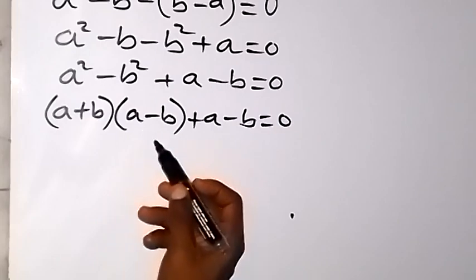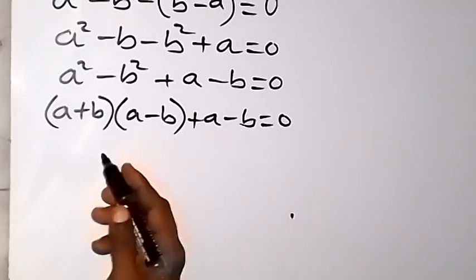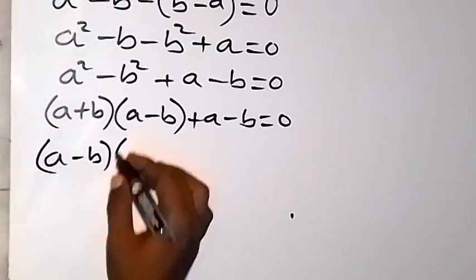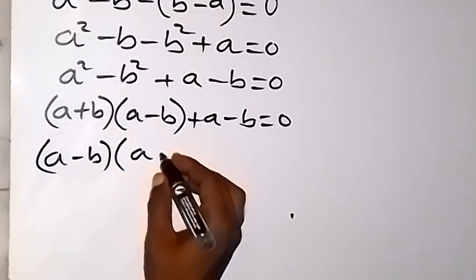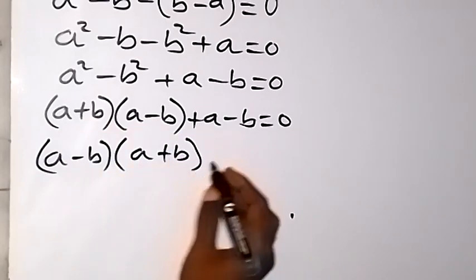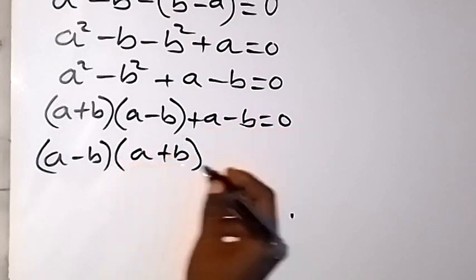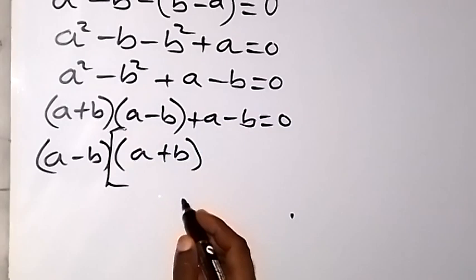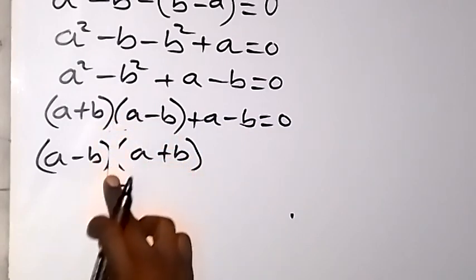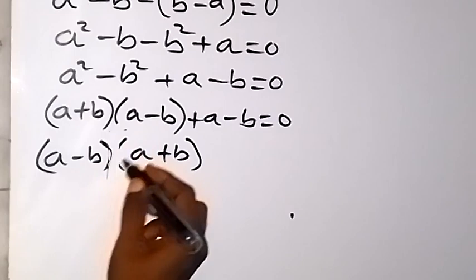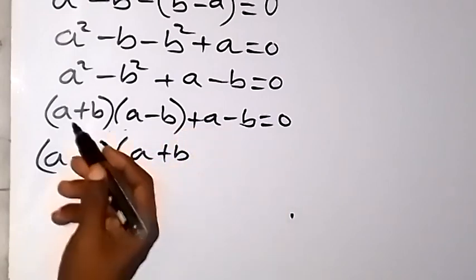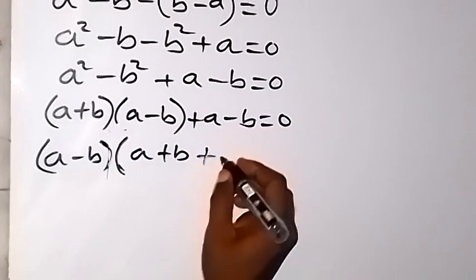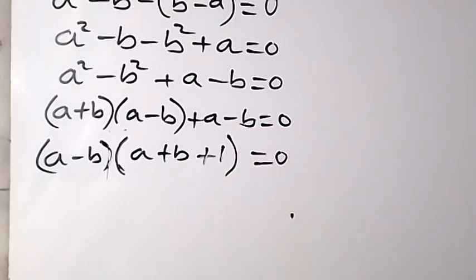We can see that (a - b) is a common factor. Taking it out, we get (a - b) times (a + b + 1) equals 0.